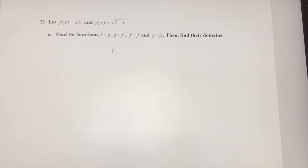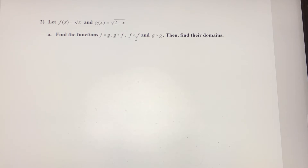This is the second example in the composition of functions videos. These functions are a little bit more complicated than what we worked with in the first example. So f of x is going to be the square root of x, and g of x is going to be the square root of 2 minus x. We're going to find these four composite functions again: f of g, g of f, f of f, and g of g. Then we'll talk about their domains.